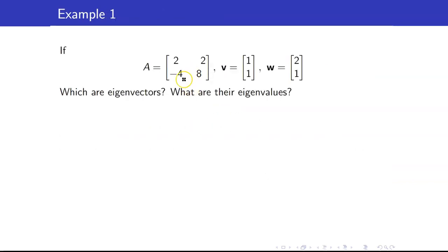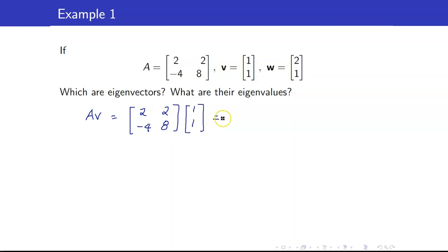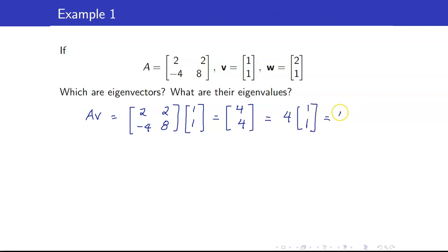For example, A is the matrix 2, 2, negative 4, 8, and V is the vector [1, 1] and W is [2, 1]. Which of these are eigenvectors, and what are their eigenvalues? Let us check A times V. This equals 2 plus 2 which is 4, and negative 4 plus 8 is 4. This equals 4 times [1, 1], and [1, 1] is exactly your V. When we multiply A to V, we got a scalar multiple of V, and that scalar is 4.